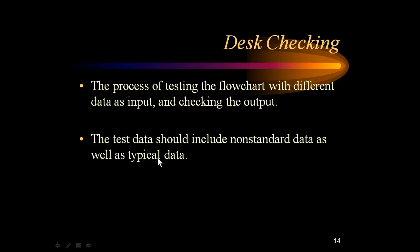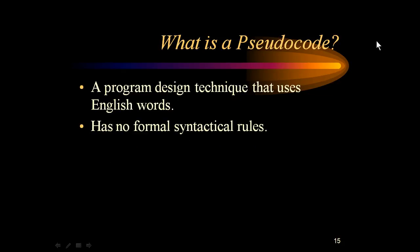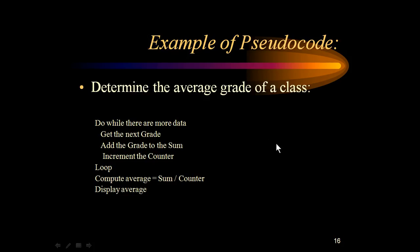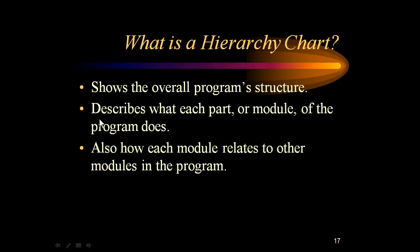Desk checking is the process of testing the flowchart with different data as input and checking whether the output is what it should be. The data should include non-standard data as well as typical data. If the program fails gracefully, you have achieved success. Now, pseudocode is a program design technique that uses English words and has no formal syntactic rules. For example, the same flowchart can be written in pseudocode: Do while there are more data — get the next grade, add the grade to the sum, increment the counter — loop. Compute average equals sum divided by counter, display average.